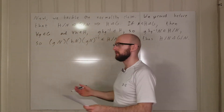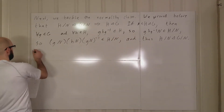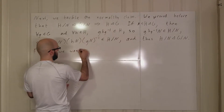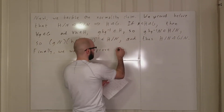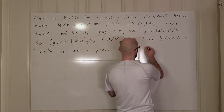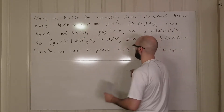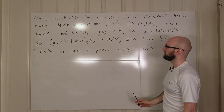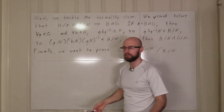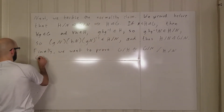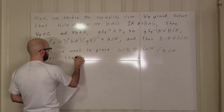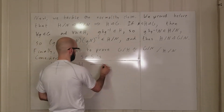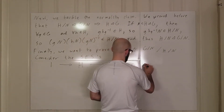So that's the normality statement — not too bad. Finally, we want to prove that G mod H is isomorphic to (G mod N) mod (H mod N), in the scenario where H is a normal subgroup of G which contains N. That's necessary because otherwise G mod H isn't even a group. Consider the short exact sequences: 1 → H → G → G mod H → 1.